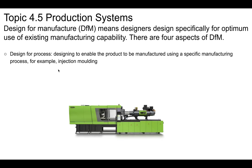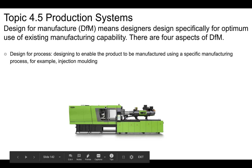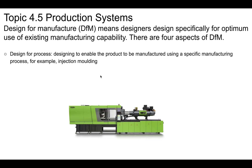Design for process would be designing for a manufacturing process. We might specifically design something for an injection molder if we had one available. So that's a design for process.